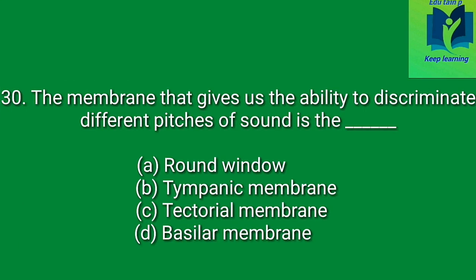The membrane that gives us the ability to discriminate different pitches of sound is dash. Option A: round window. Option B: tympanic membrane. Option C: tectorial membrane. Option D: basilar membrane. Answer: basilar membrane.